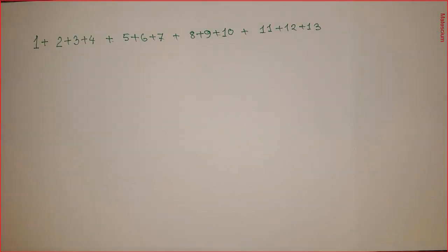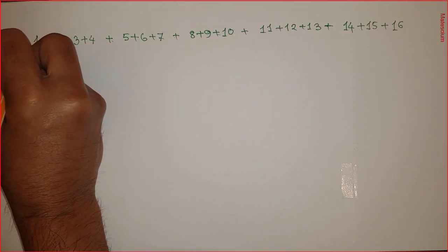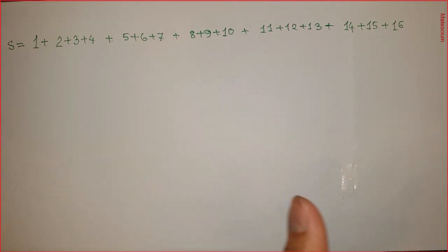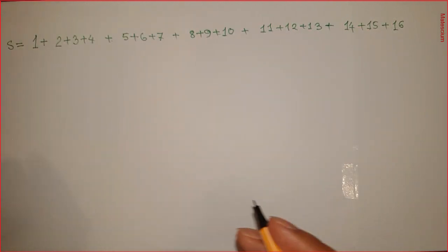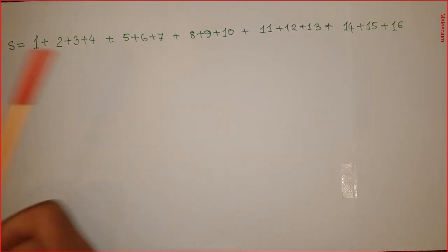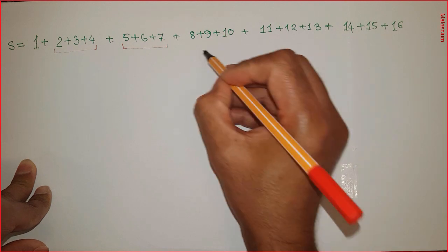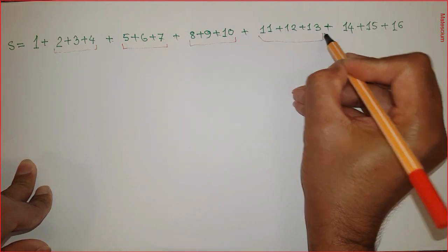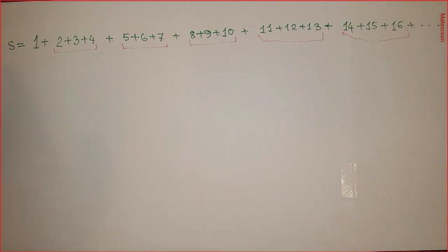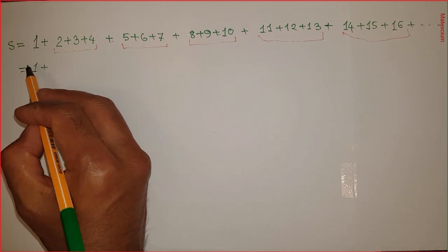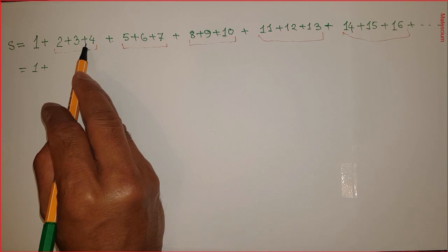Let's rewrite this series again. Let us consider this series is equal to S — this is a random parameter I'm using just for simplification. Now, let's consider these three numbers together, then the next three numbers together, and so on, with this series continuously going up to infinity. I am considering the first digit alone, and grouping the rest in threes.